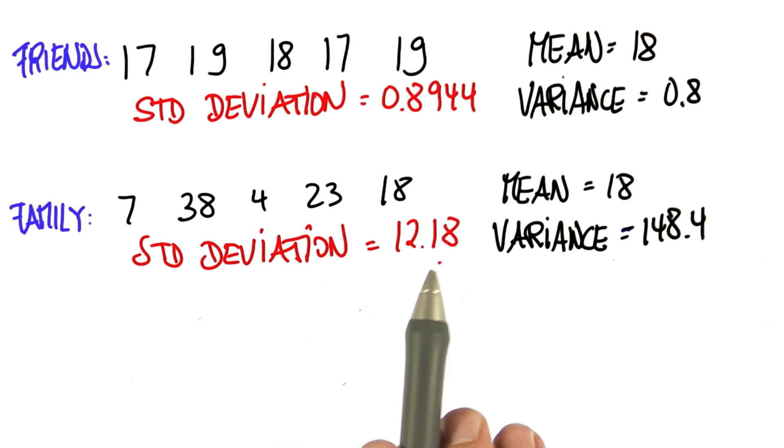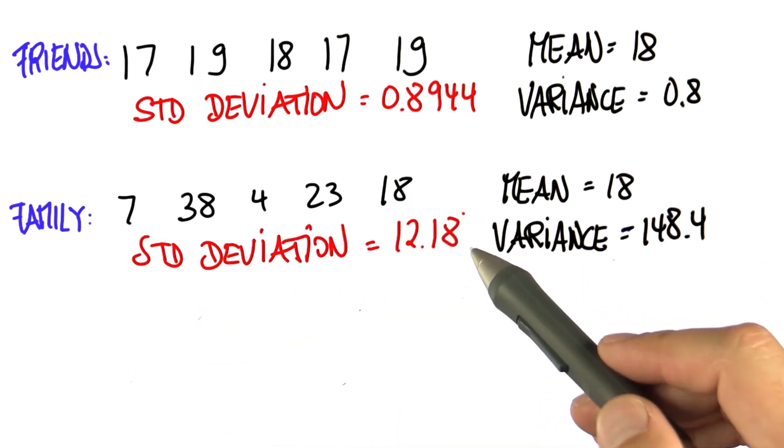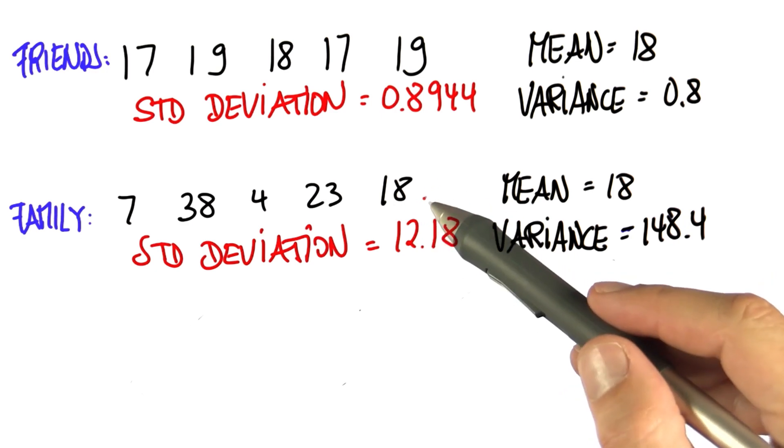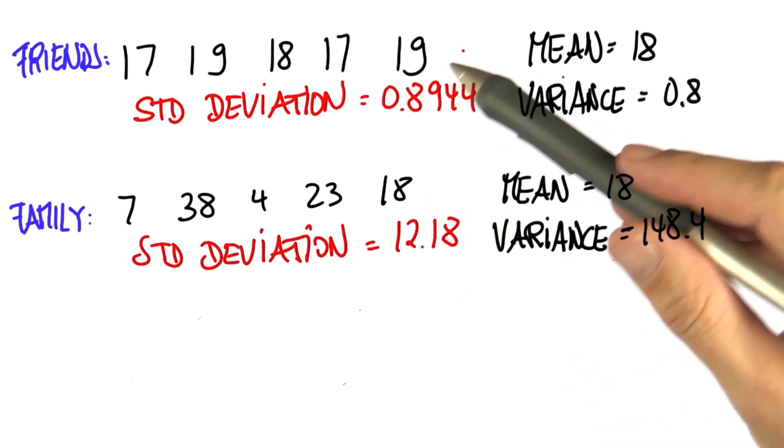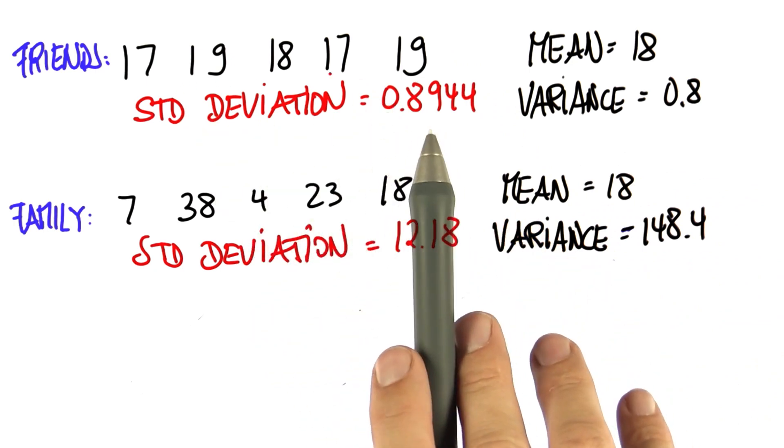This is how much you expect the age of an individual family member to deviate from the mean by about 12 years, whereas here you expect the deviation to be just below one year.